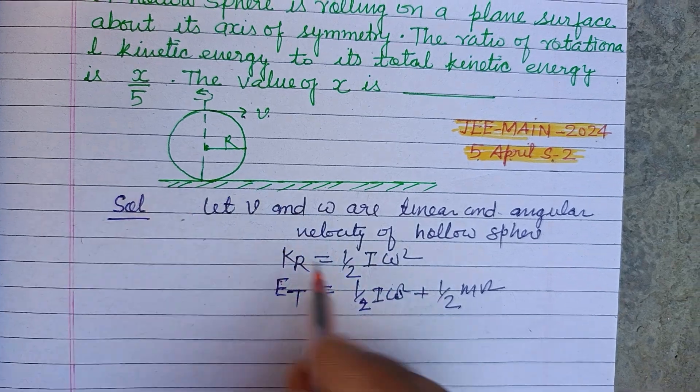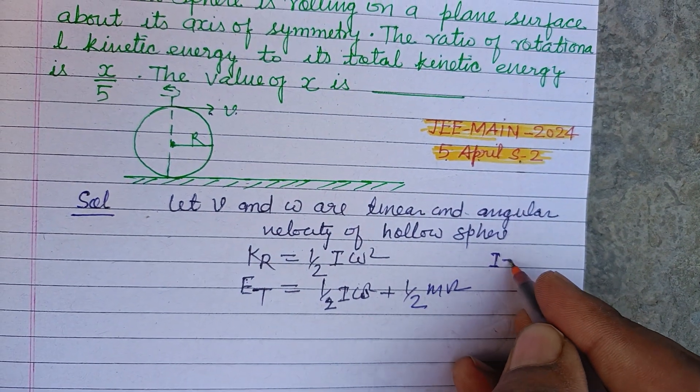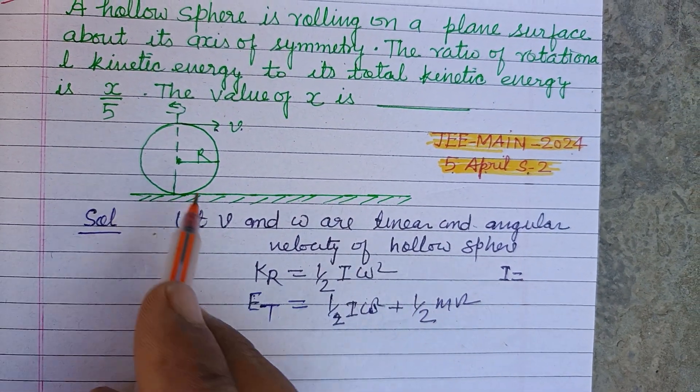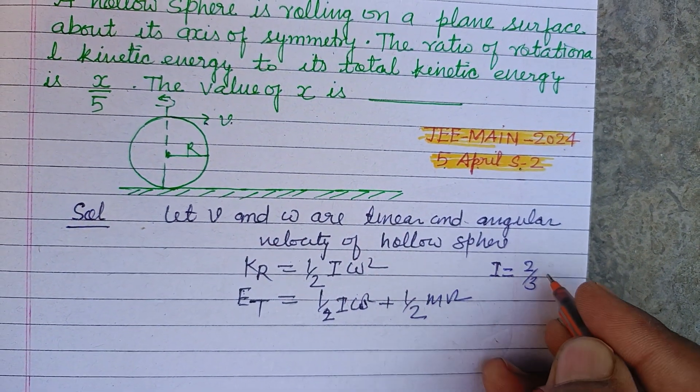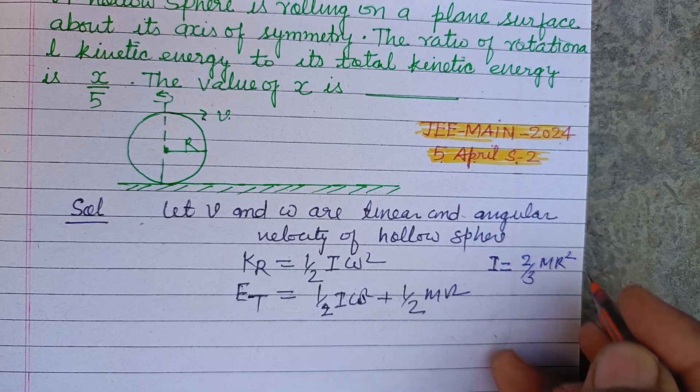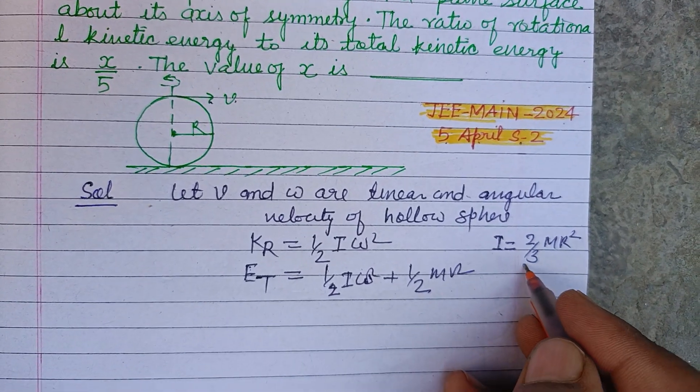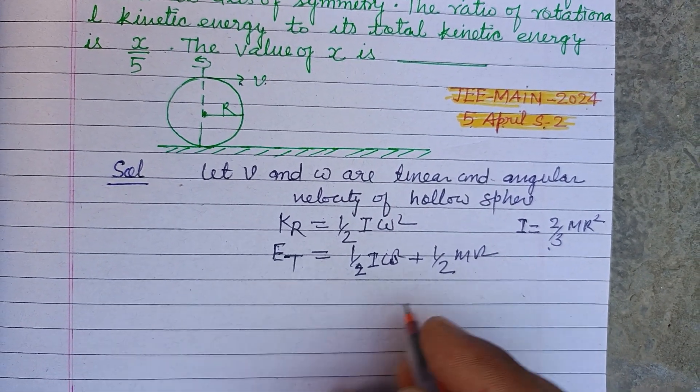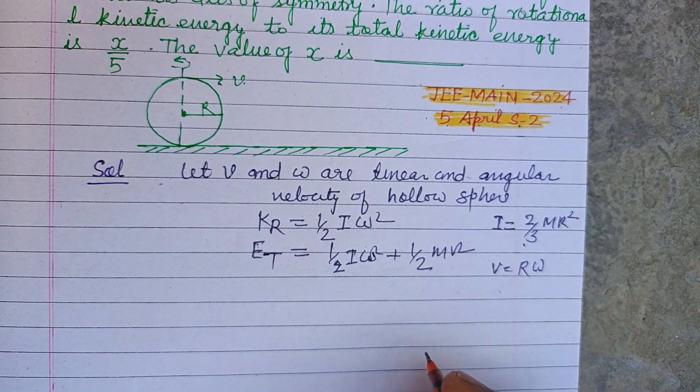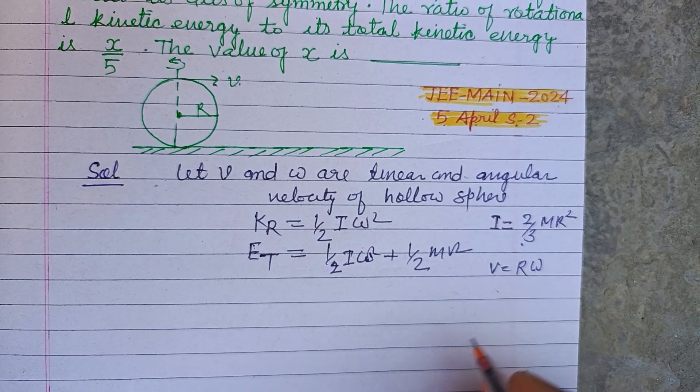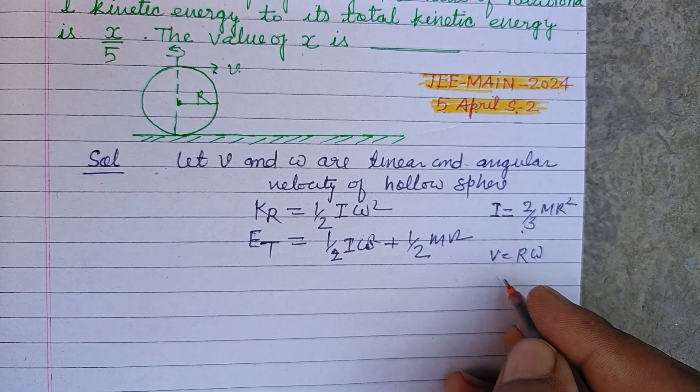Here I, which is the moment of inertia about its diameter, is 2 by 3 m r squared for a hollow sphere. And you know that v equals r omega, where r is the radius of the hollow sphere.